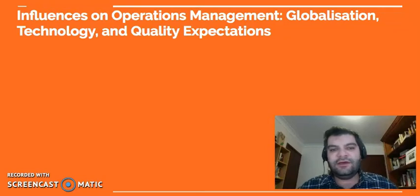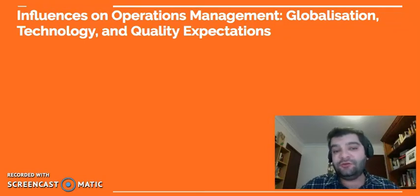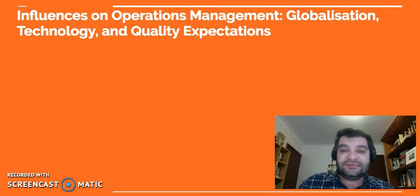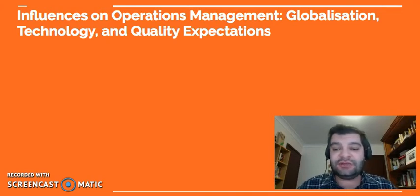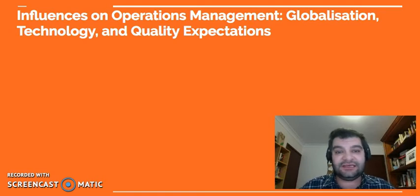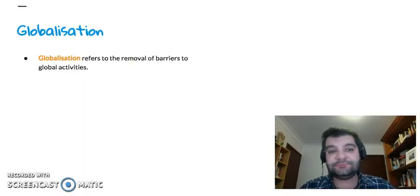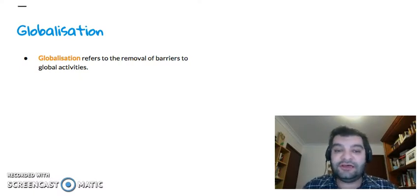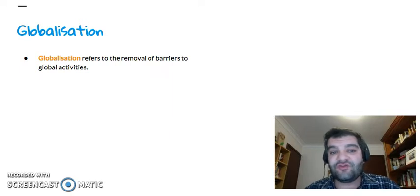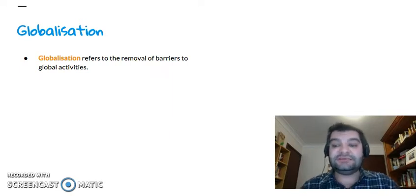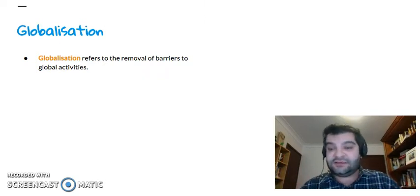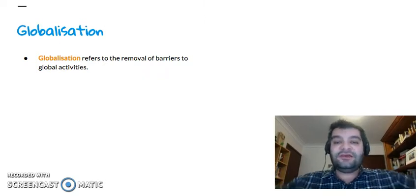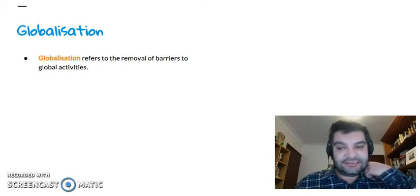Hi there. In this video I'm going to be looking at the influences on operations management, and more specifically looking at globalization, technology, and quality expectations. To start with, looking at globalization — this refers to the removal of barriers to global activities. Now, it's obviously not physically, but metaphorically, the world really is getting smaller.